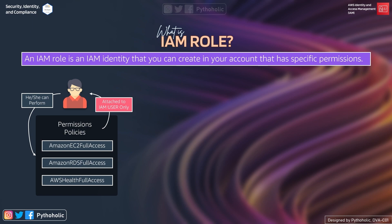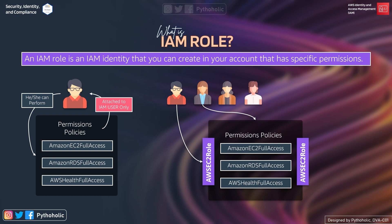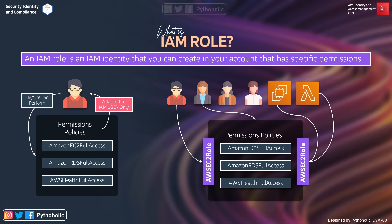AWS managed policies like Amazon RDS Full Access and AWS Health Full Access are normally attached to IAM users like you or your team members. But what if you want services themselves to perform certain operations? That's where we create roles. For example, you can create a role named 'ec2-aws-role' that has multiple policies attached to it. This role can be attached to users and also to services like EC2 or Lambda, allowing them to perform operations on the services you want.